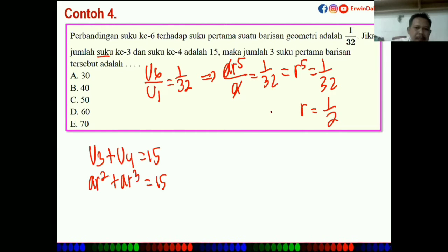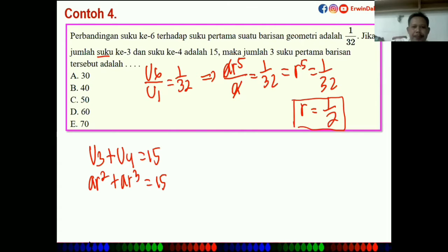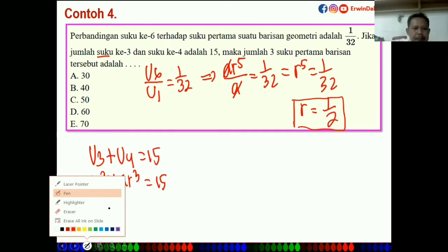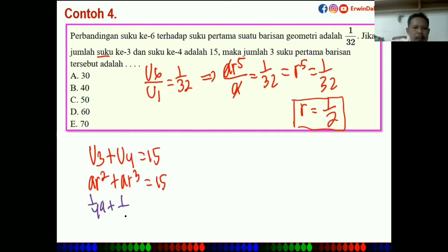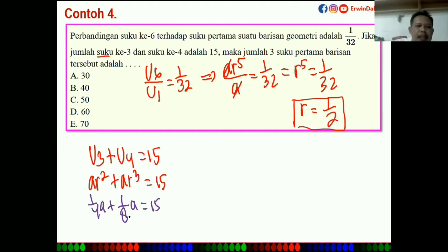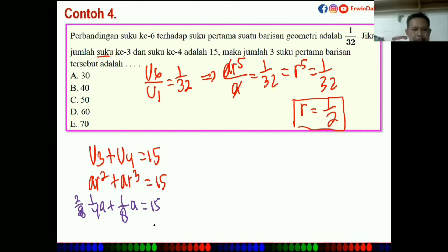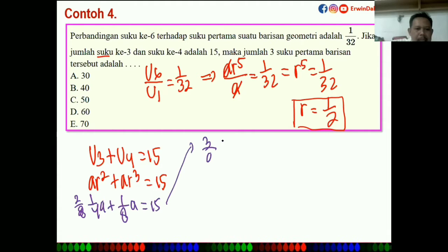Masukkan R = 1/2. Berarti (1/4)A + (1/8)A = 15. Disamakan penyebutnya menjadi 2/8A + 1/8A = 3/8A.